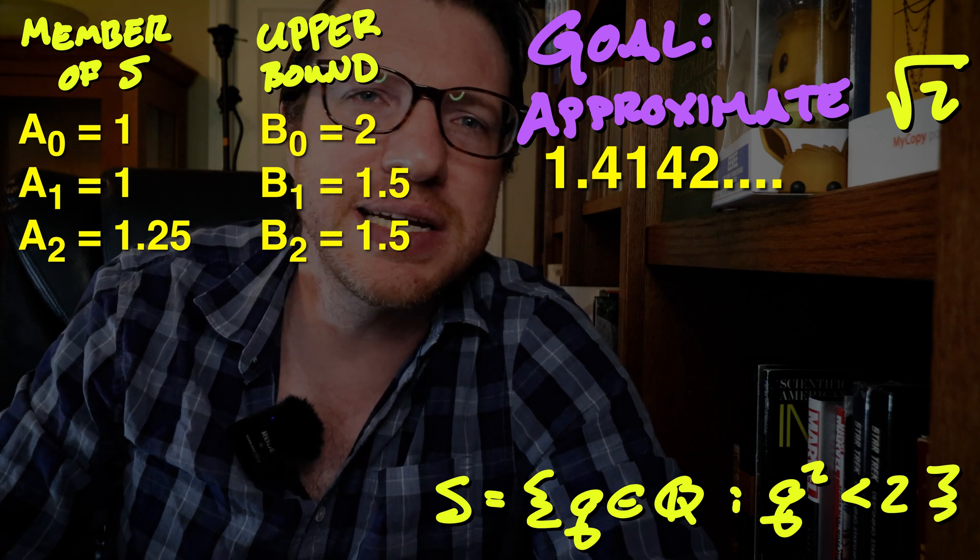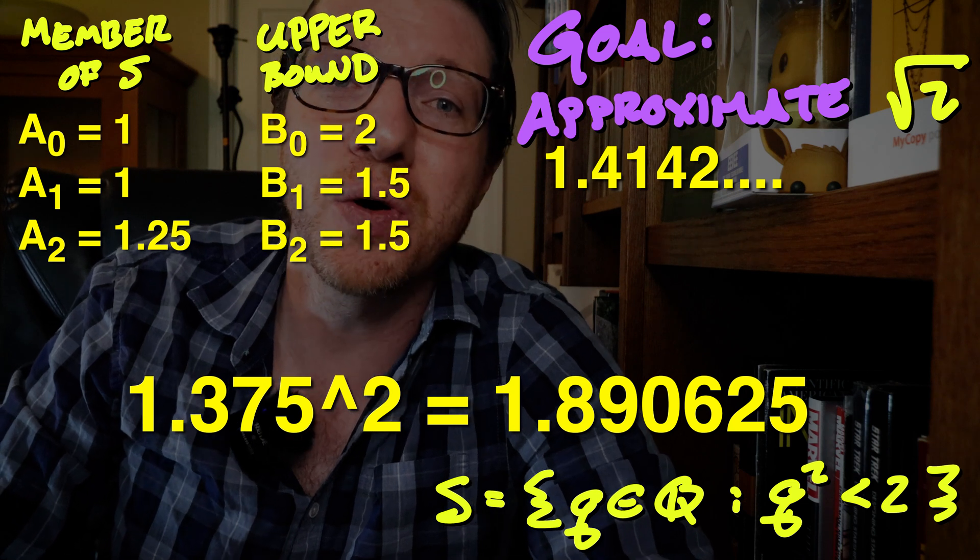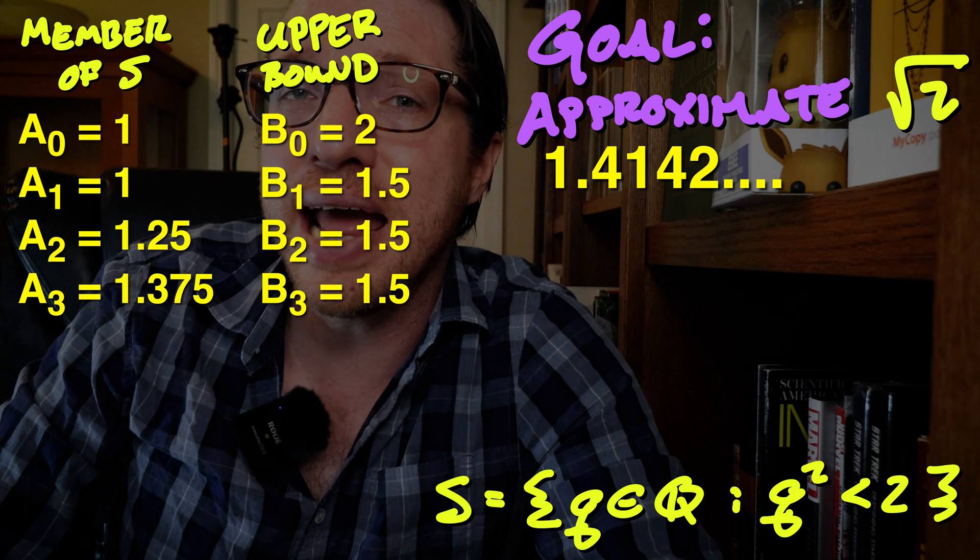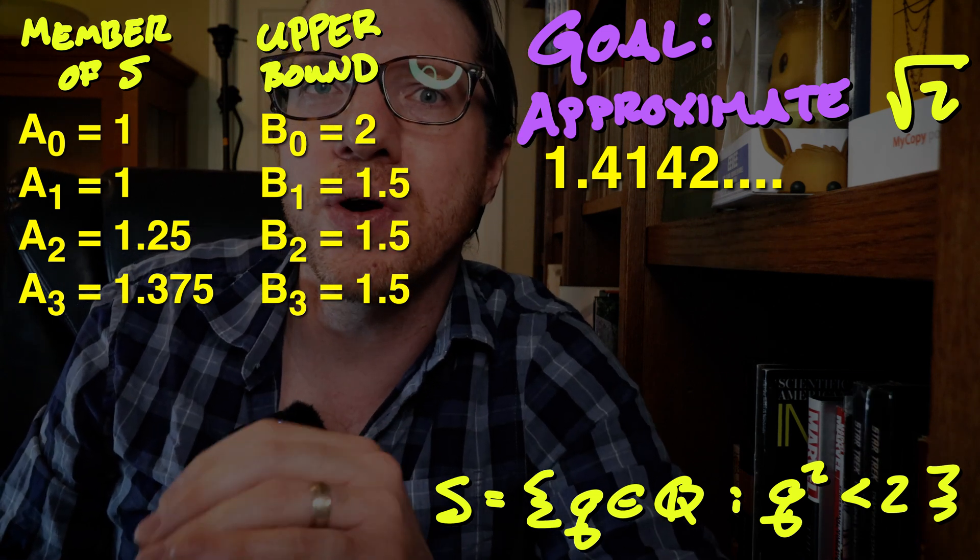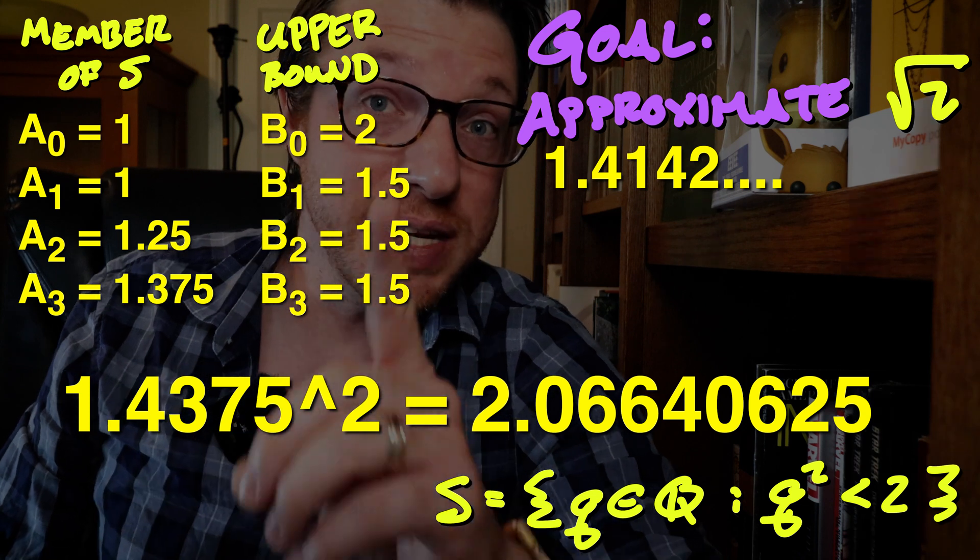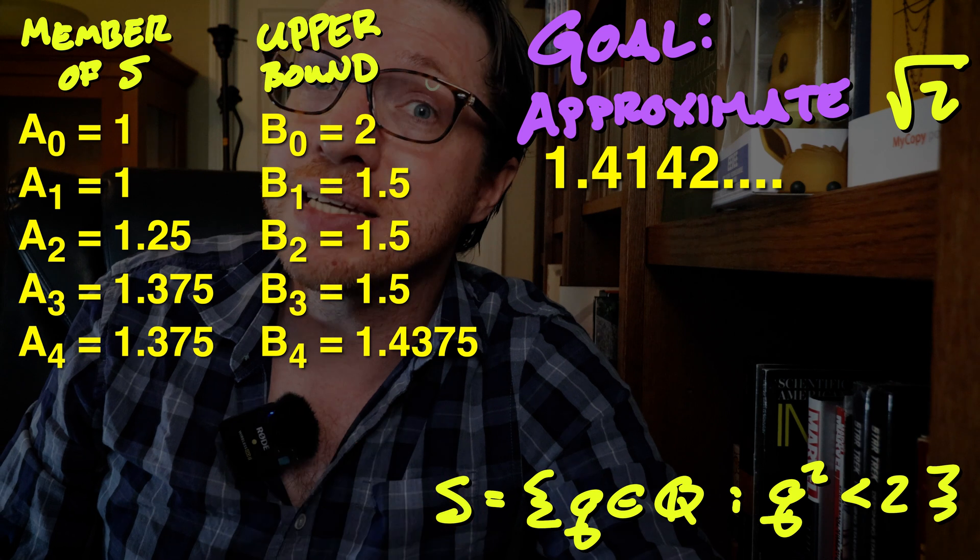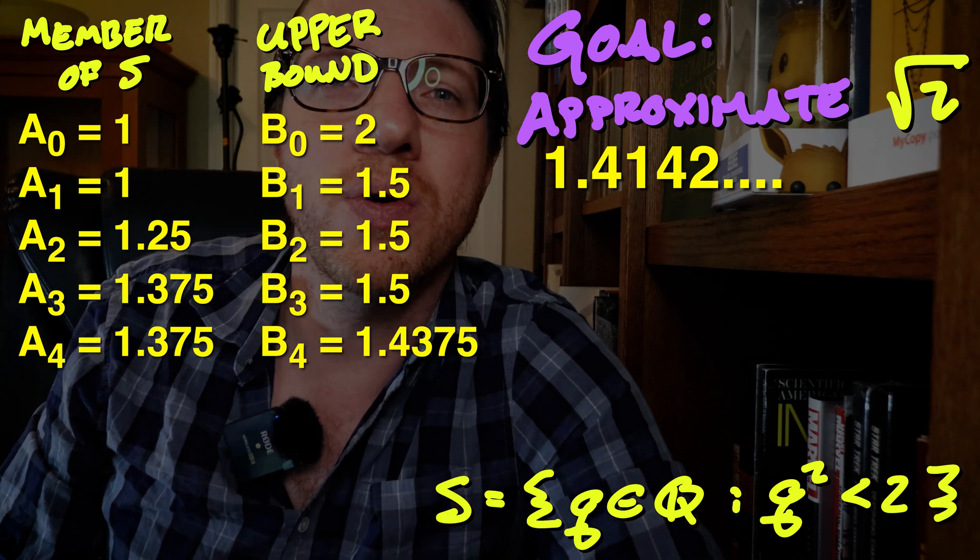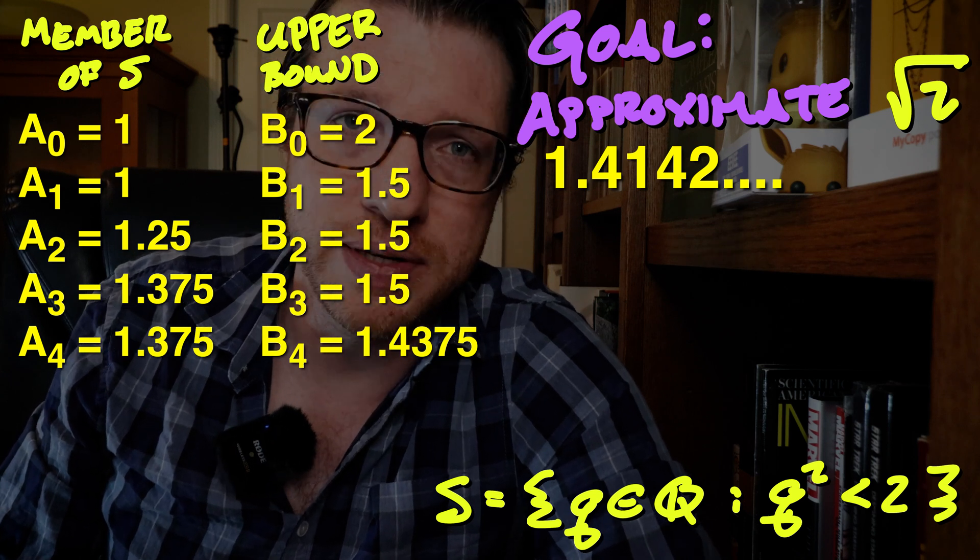It didn't change. And a2 is 1.25. The next round average is 1.375. This is less than 2. So we get b3 as 1.5 and a3 as 1.375. The next average is 1.4375. The square of this is bigger than 2. So it's an upper bound and we replace b this time. That gives us b4 as 1.4375 and a4 as 1.375.